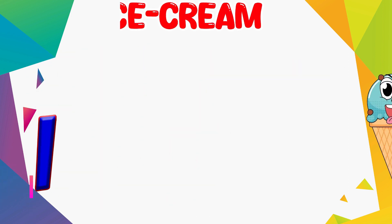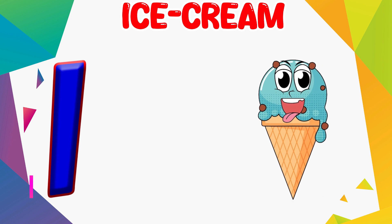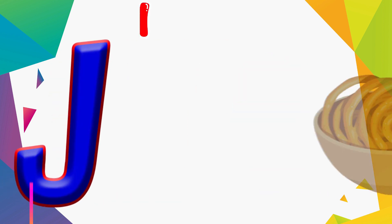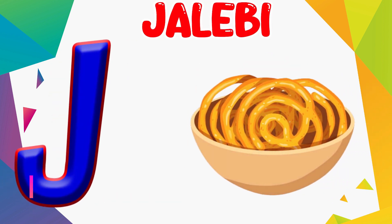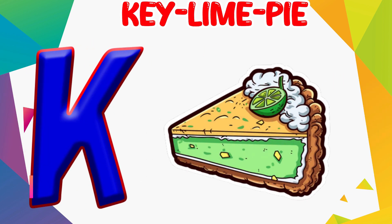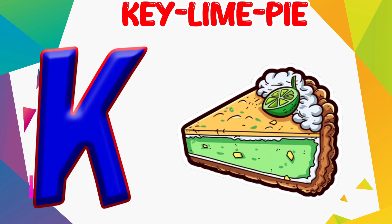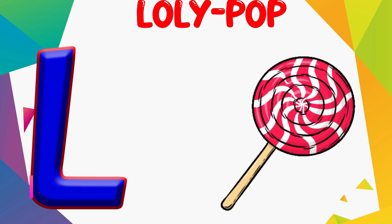I is for Ice Cream. I. Ice Cream. J is for Jelly Bean. J. Jelly Bean. K is for Key Lime Pie. K. Key Lime Pie. L is for Lollipop. L. Lollipop.